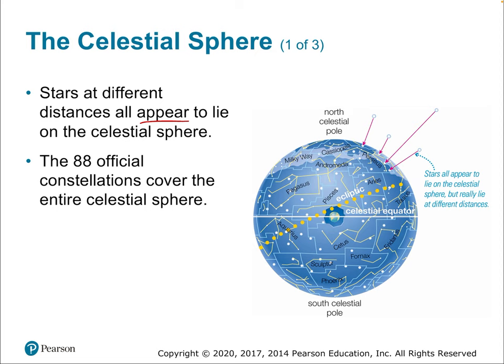So for a long time, many people thought the stars really were on a huge sphere. They're not — they form the Milky Way, one of many galaxies. But it's still useful to think of the sky as a fixed, glass-like sphere with all the stars as dots on it, with Earth somewhere inside. It's a fanciful idea, but it helps us think about what we're seeing in the sky.